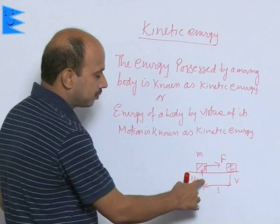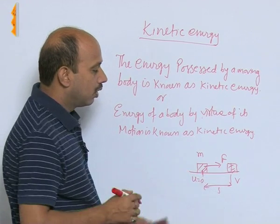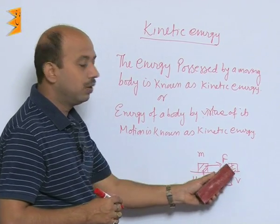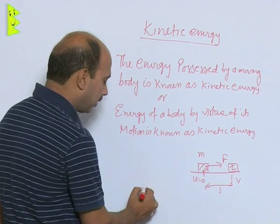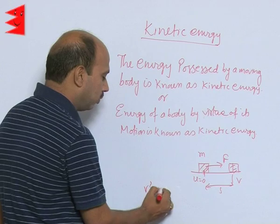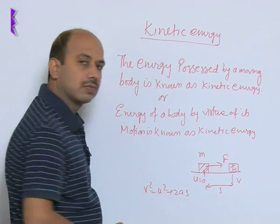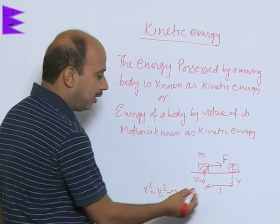Now we can calculate what is the work done in moving the object from here to here. So we know equation of motion: v square is equal to u square plus 2 a s. u I have taken here 0.